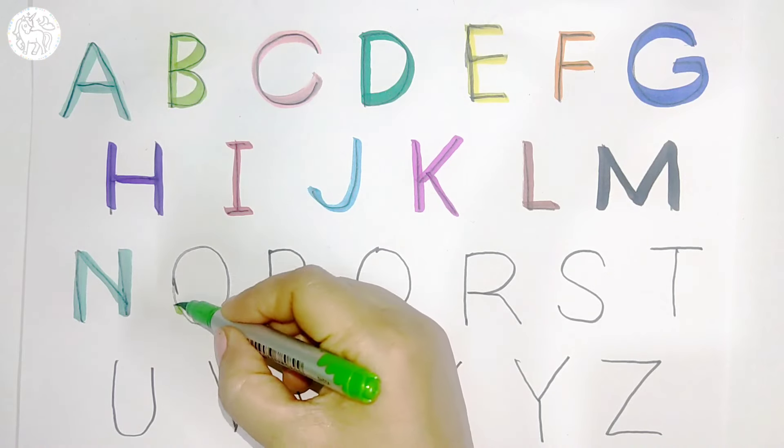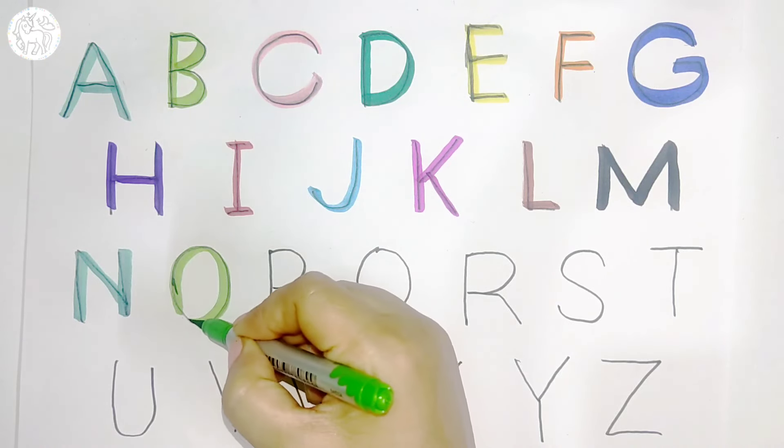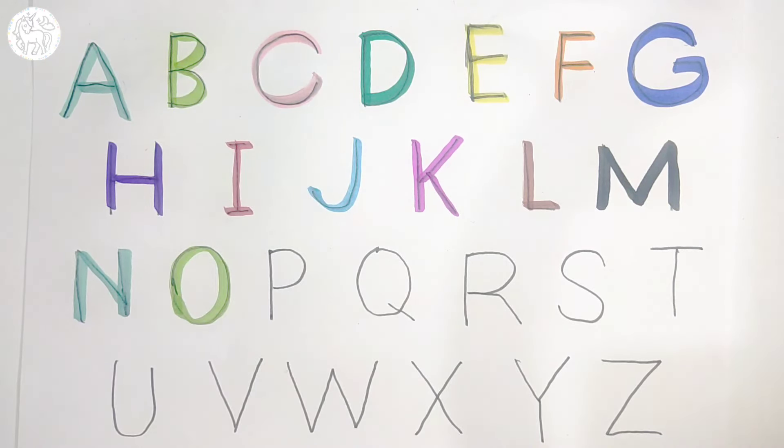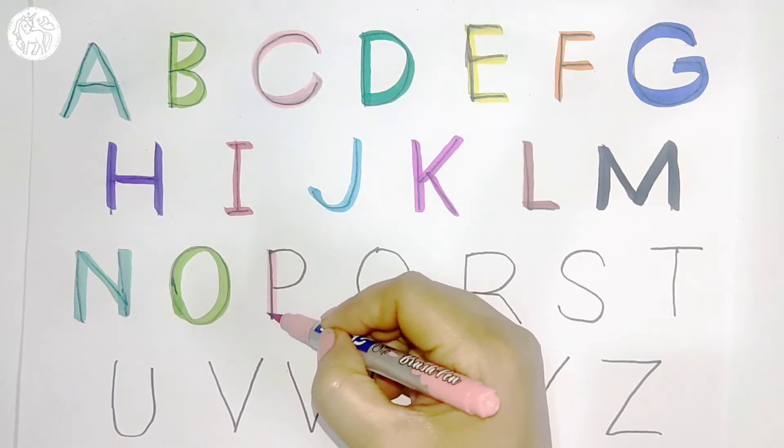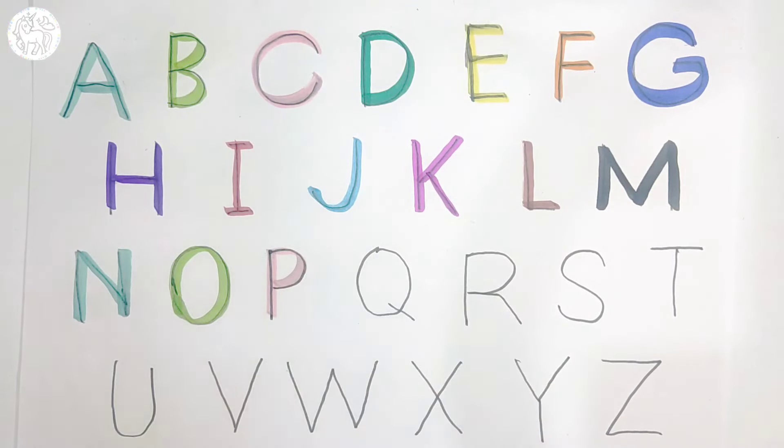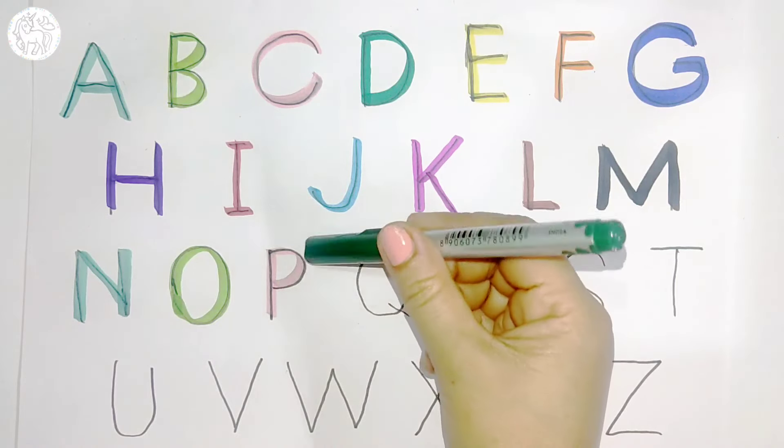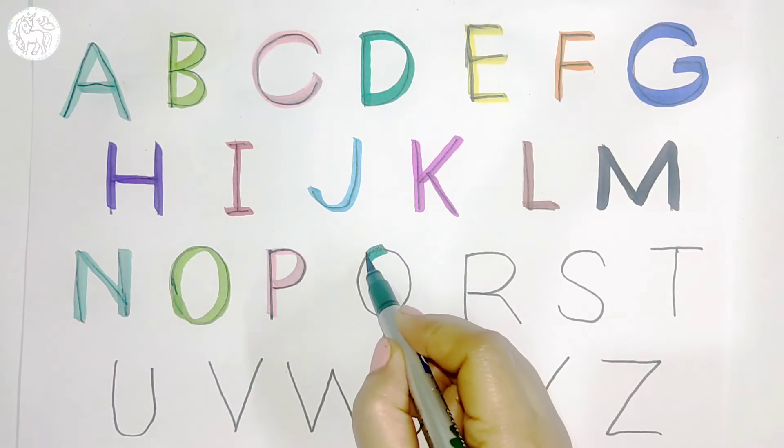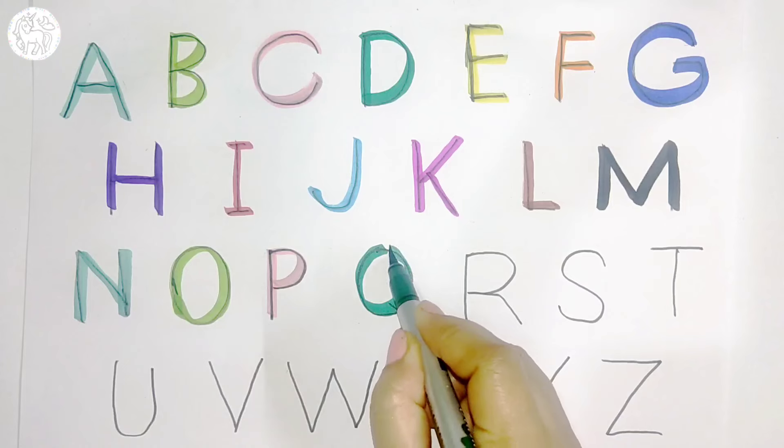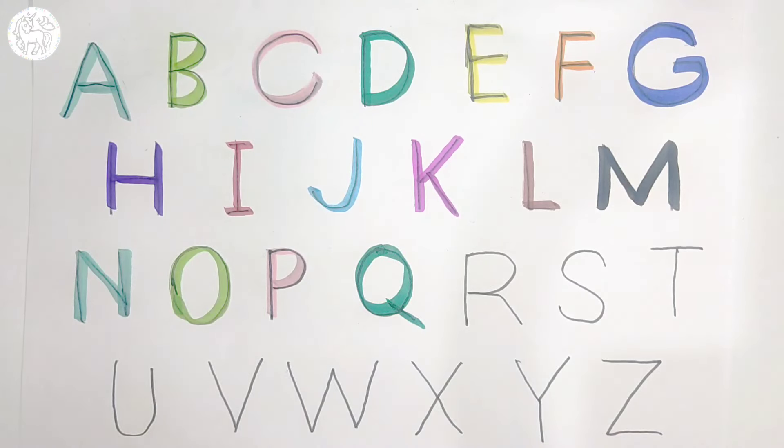Light green color. O, O for owl. Pink color. P, P for parrot. Dark green color. Q, Q for queen.